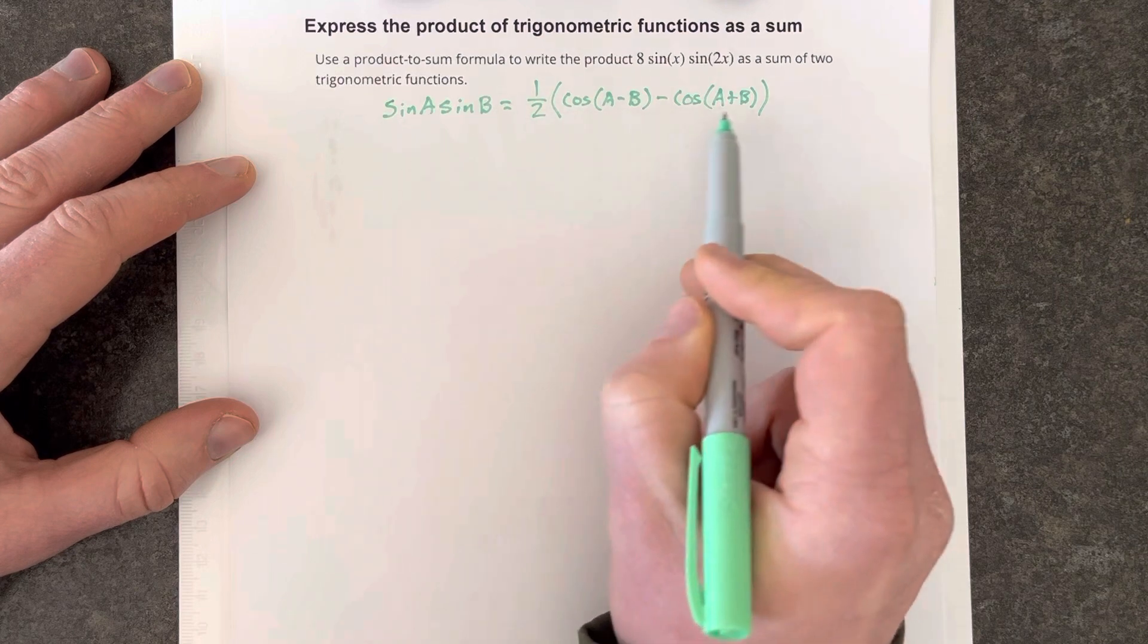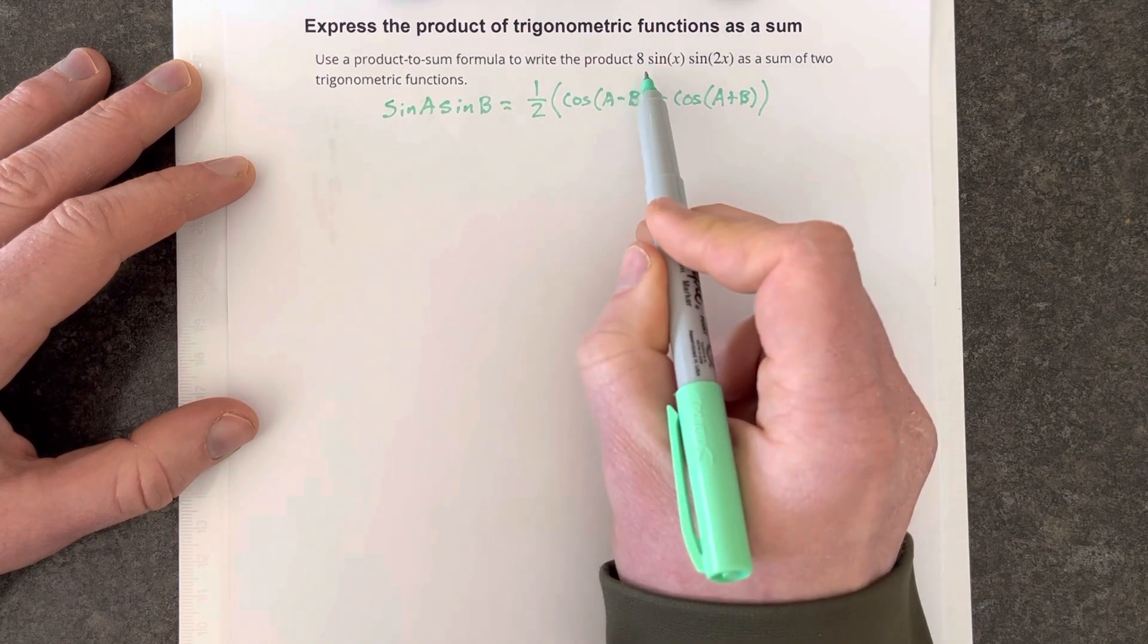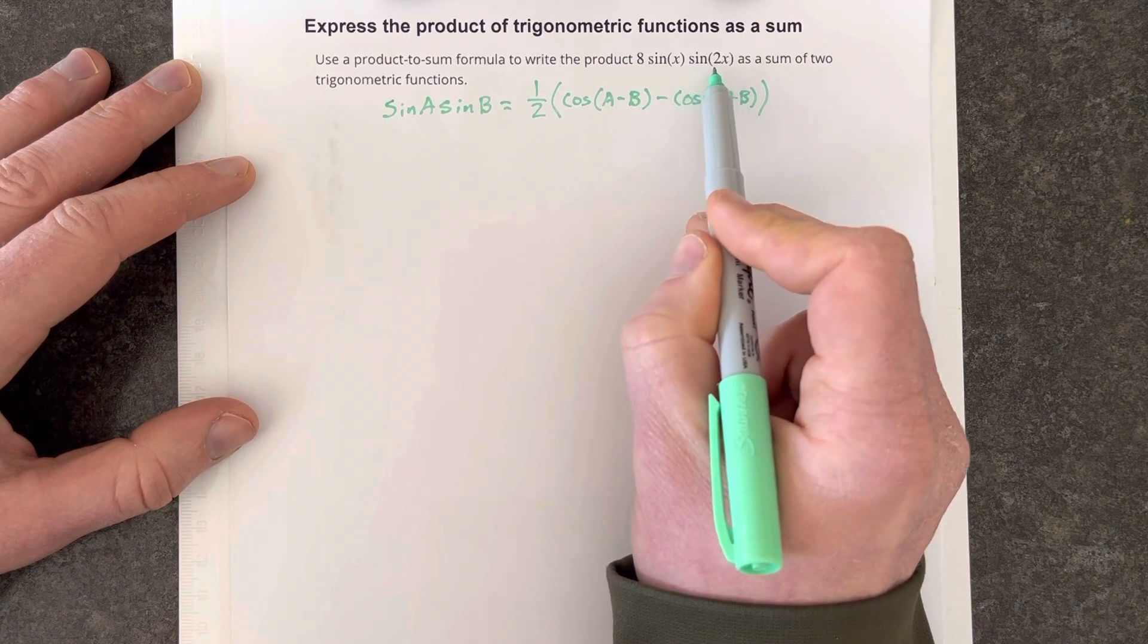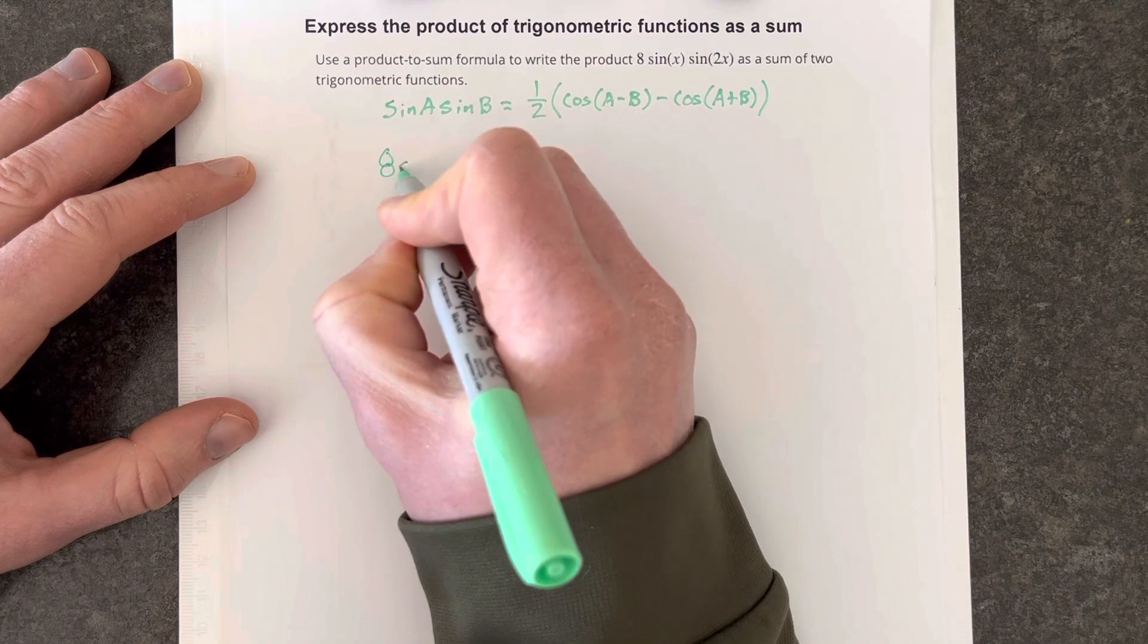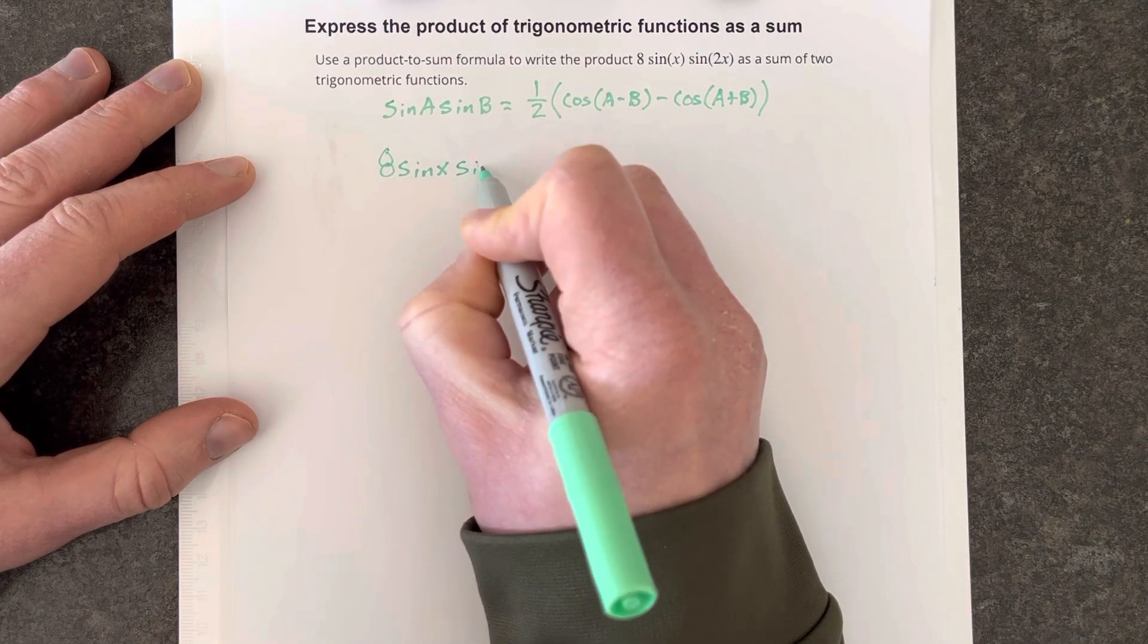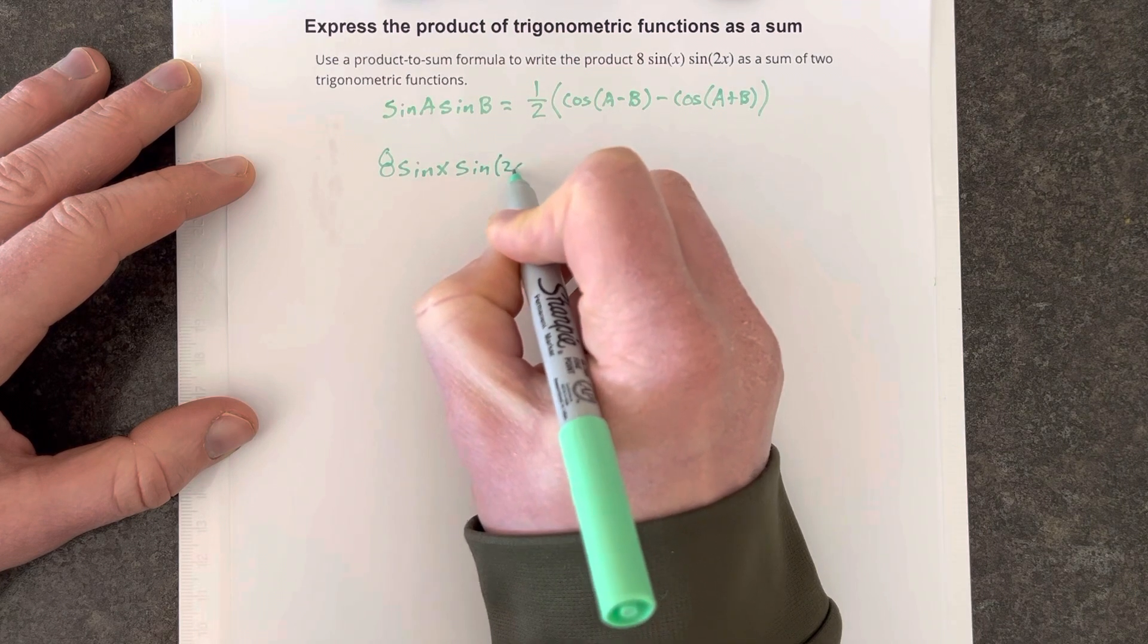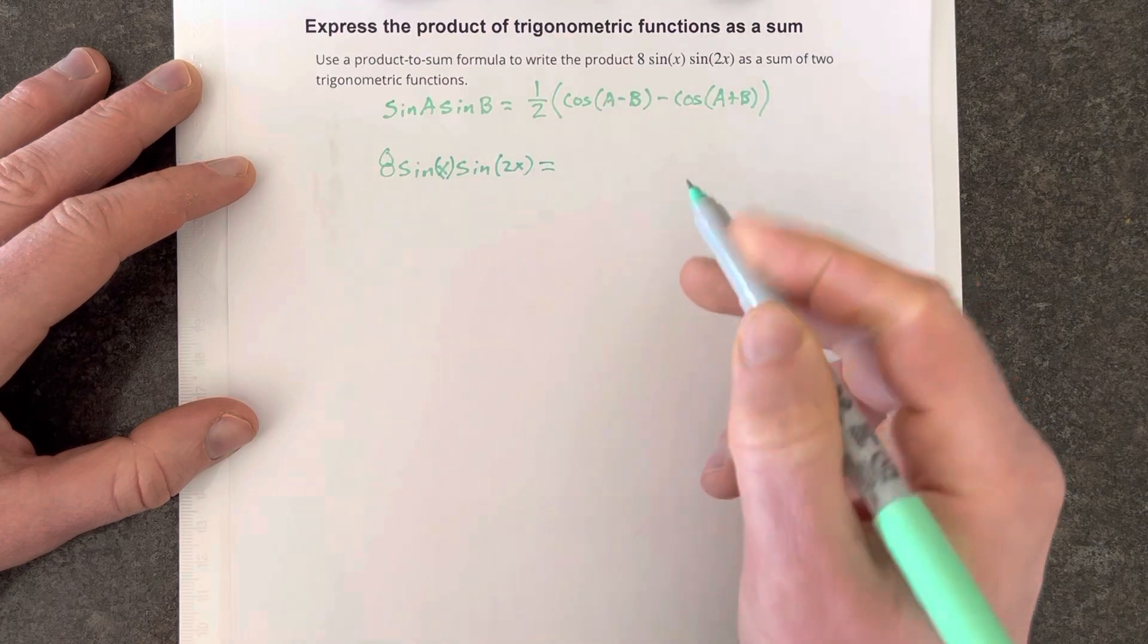So we're going to take this formula, which is the product-to-sum formula, and we're going to apply it to 8 sin x sin 2x. To use that, we're going to start by writing 8 sin x sin 2x in parentheses, is going to equal,